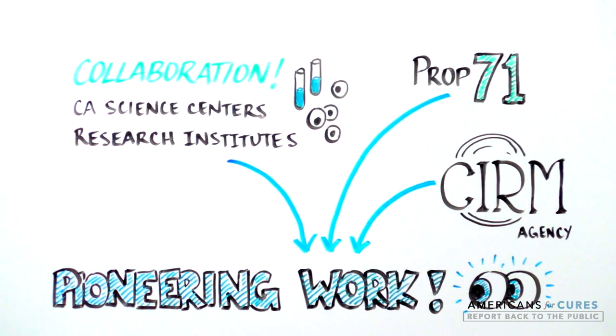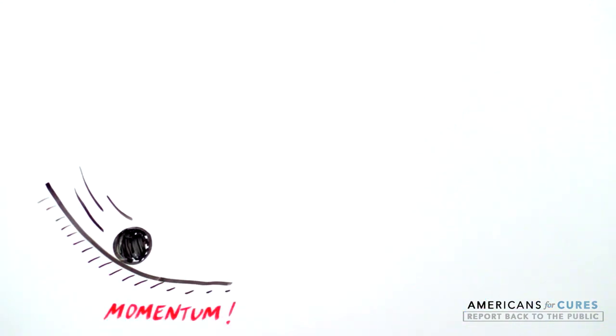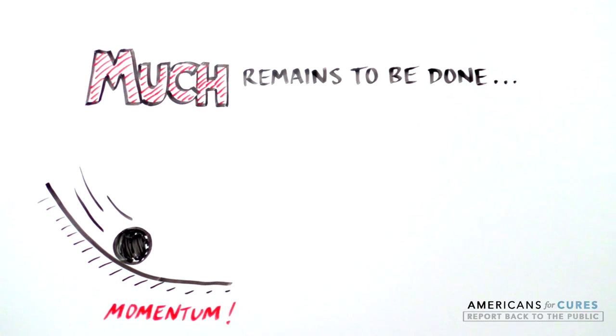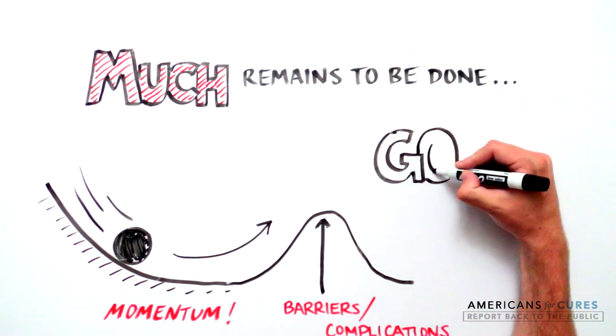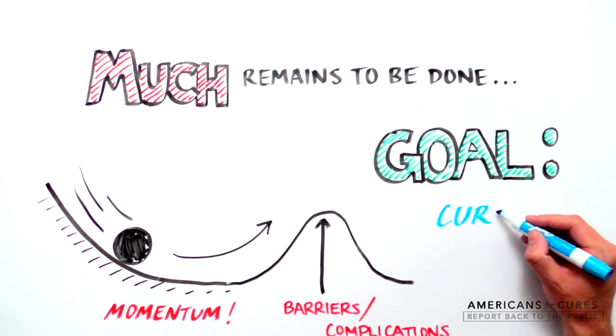As scientists and patient advocates build on the progress that Proposition 71 has enabled, we must keep the momentum going, understanding that there is still much work to be done. We must remember that human trials will celebrate successes. The barriers will surface, along with complications and challenges. So patience and understanding of the scientific discovery process is essential.